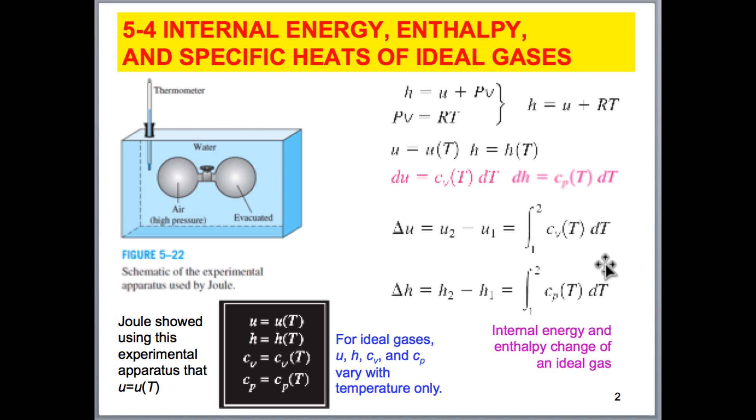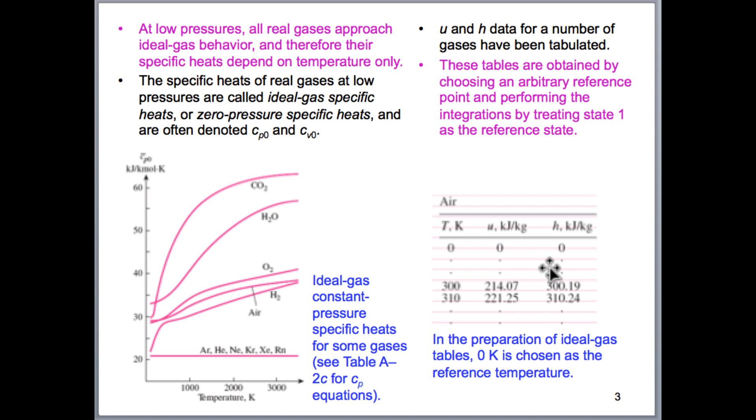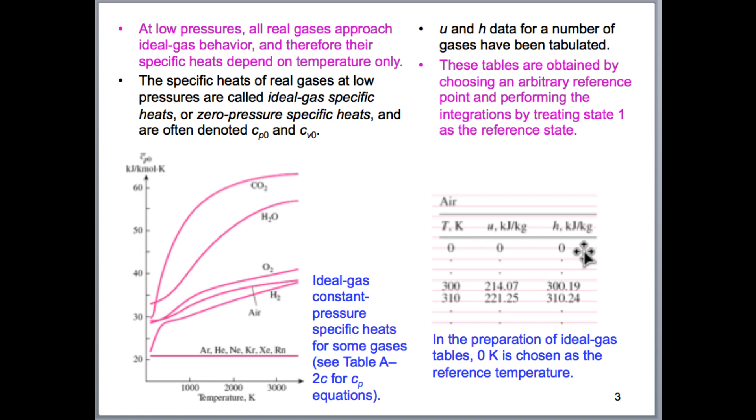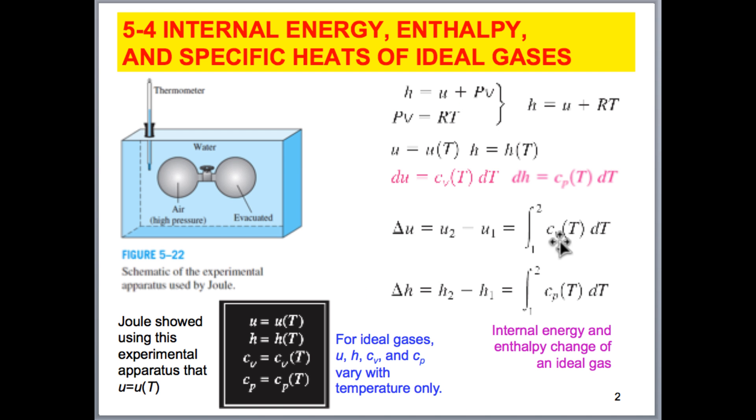Well, fortunate for us, we have tables in the back of our book, which we've already discussed in the last chapter, that we can find out what the value of the internal energy is at a particular condition, knowing the temperature. We can also come up with solutions, or equations approximating this value here, either through experimental determination or through theoretical or statistical calculations, that gives us a relationship for the Cv and Cp properties.